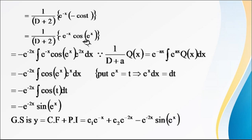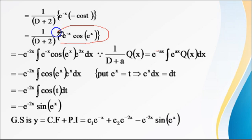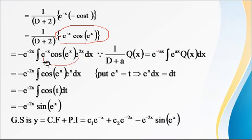Again we apply the same formula 1 upon (D plus a) Q(x) equal to e raised to minus ax times the integral of e raised to ax into Q(x) dx. Here a equals 2, so we get e raised to minus 2x times the integral of e raised to 2x into Q(x) dx. Here Q(x) is minus e raised to minus x times cos(e raised to x). Taking the minus outside, and combining e raised to minus x times e raised to 2x, we get e raised to x. So the expression becomes minus e raised to minus 2x times the integral of e raised to x times cos(e raised to x) dx.